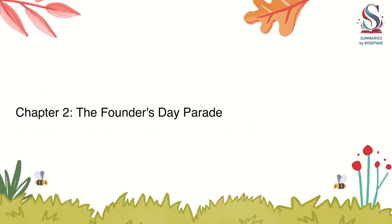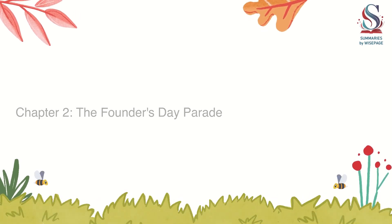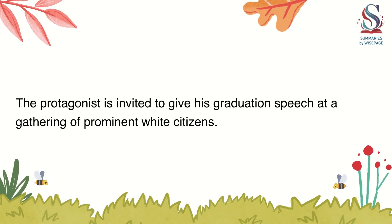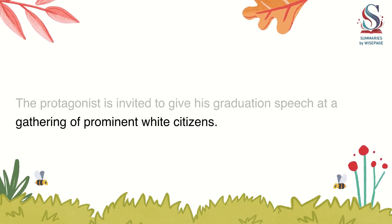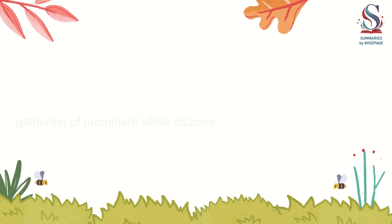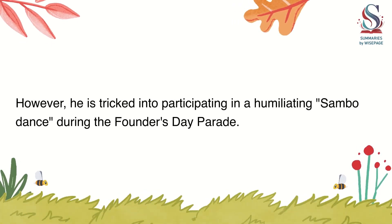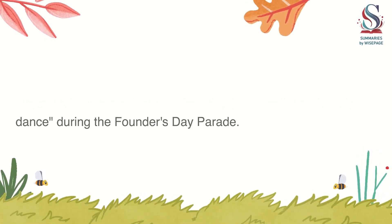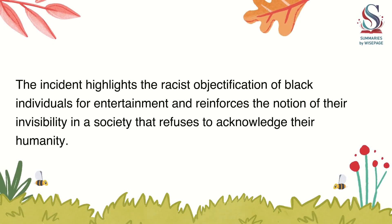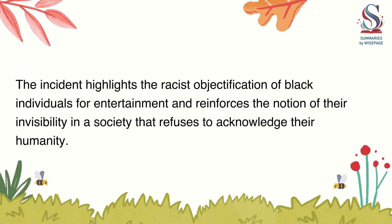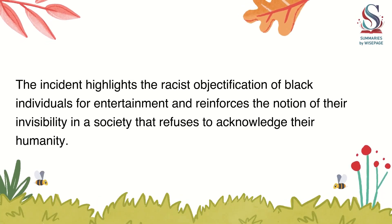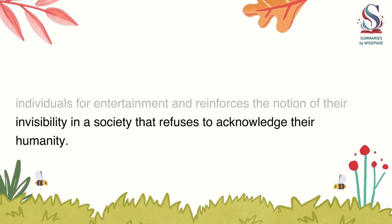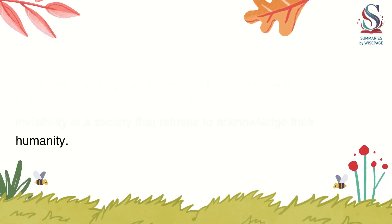Chapter 2: The Founder's Day Parade. The protagonist is invited to give his graduation speech at a gathering of prominent white citizens. However, he is tricked into participating in a humiliating sambo dance during the Founder's Day Parade. The incident highlights the racist objectification of black individuals for entertainment and reinforces the notion of their invisibility in a society that refuses to acknowledge their humanity.